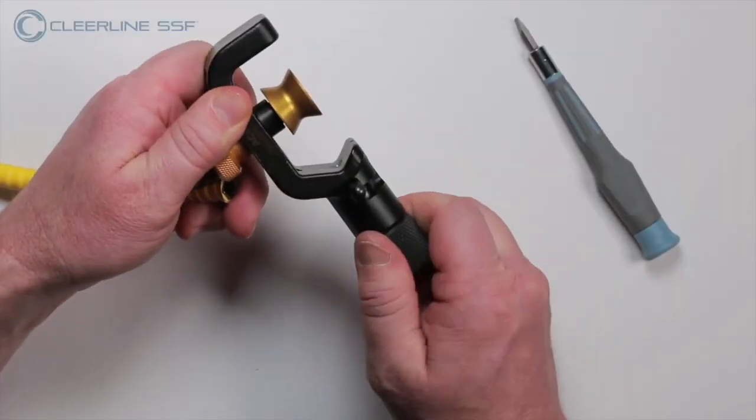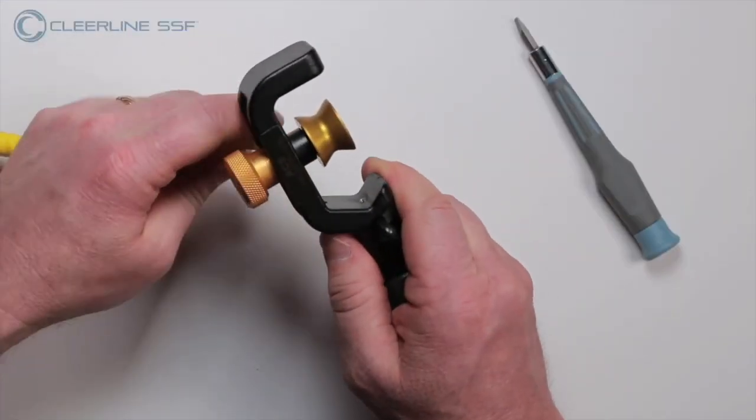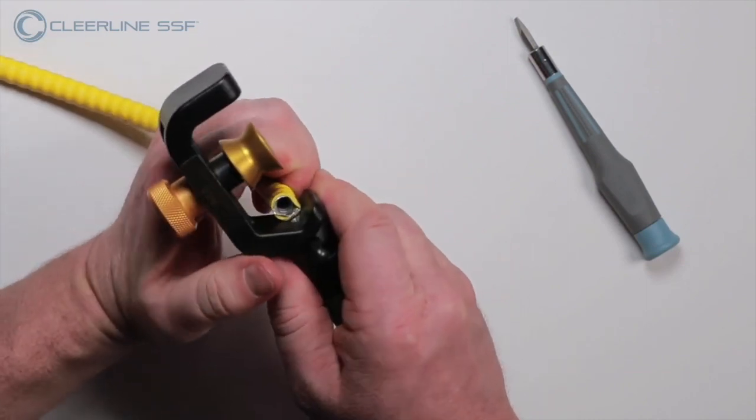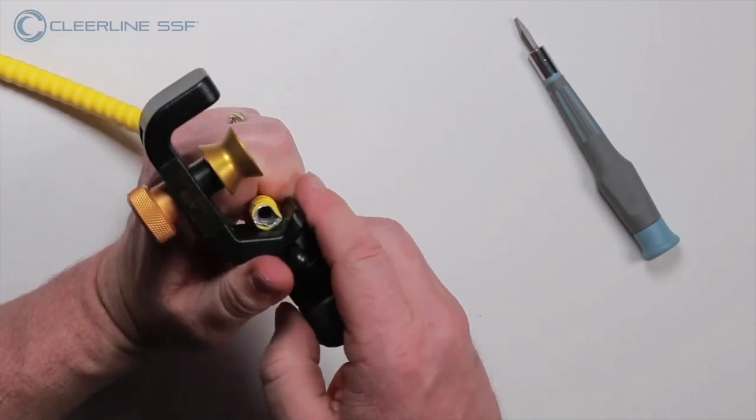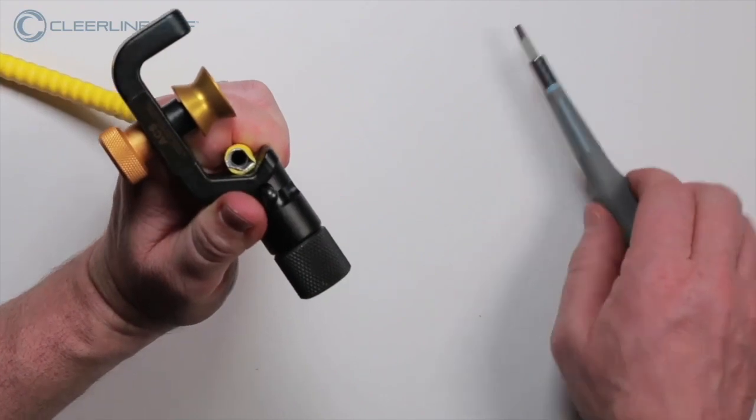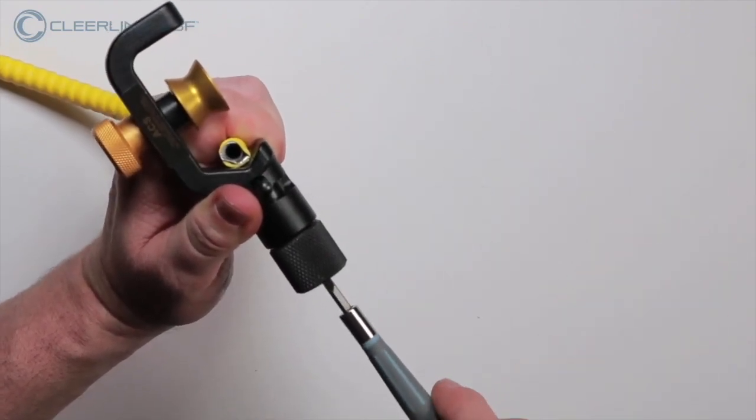For the next step, it's always the best practice to set the blade height with a sample piece of the cable you're working with. To proceed, tighten the base thumb screw on the slitting tool and place the cable into the V-groove.